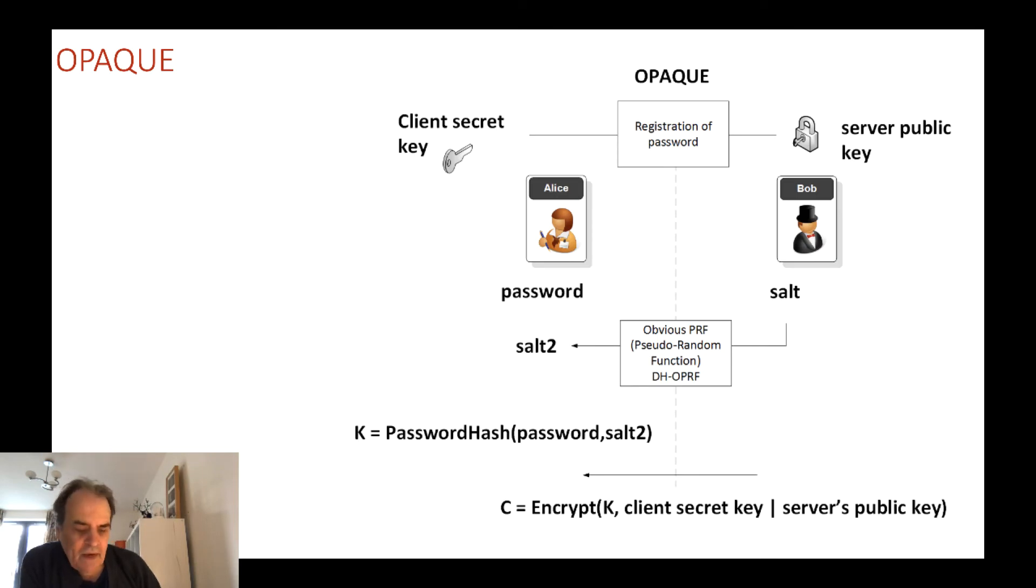At the core of this is what's called an Oblivious Pseudo-Random Function, and it uses Diffie-Hellman methods to be able to pass the values across between Alice to the other side and Bob to the other side too. In the end they should hopefully end up with the same encryption key which they can then use for secure communications.